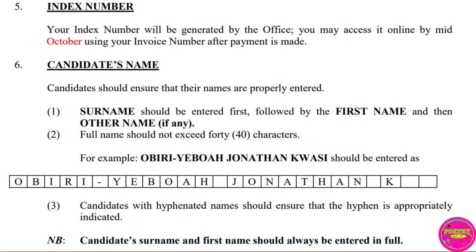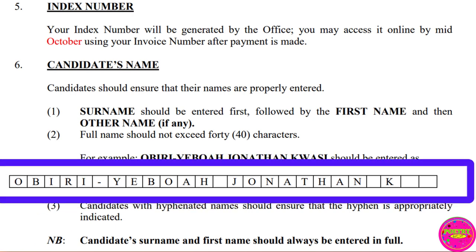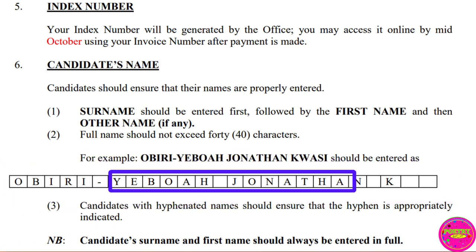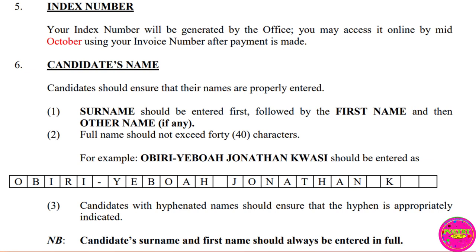Candidates should ensure that their names are properly entered. The surname should be entered first, followed by the first name, and then other names if any. The full name should not exceed 40 characters. For example, 'Obreyabua Jonathan Kwezi' should be entered as 'Obreyabua Jonathan K'. Candidates with hyphenated names should ensure the hyphen is appropriately indicated. The candidate's surname and first name should always be entered in full.